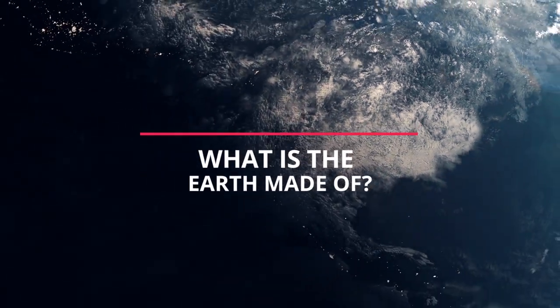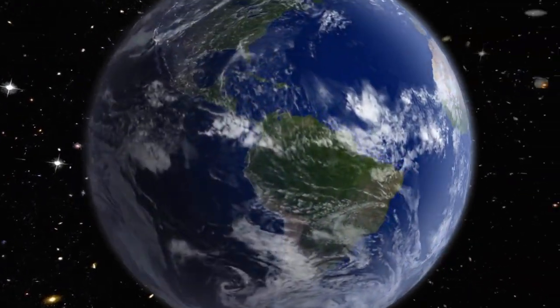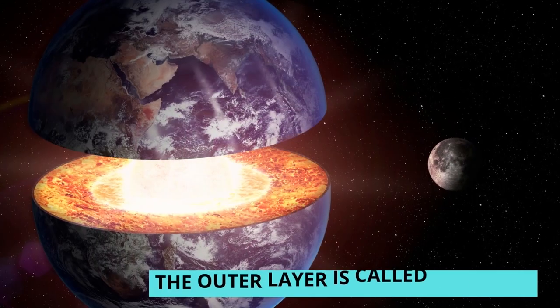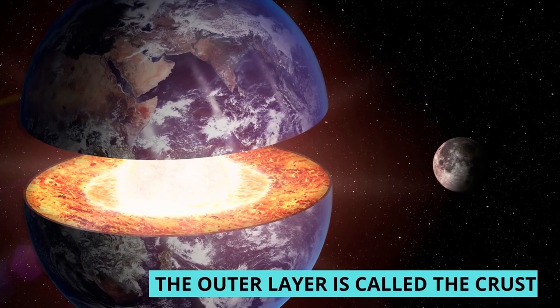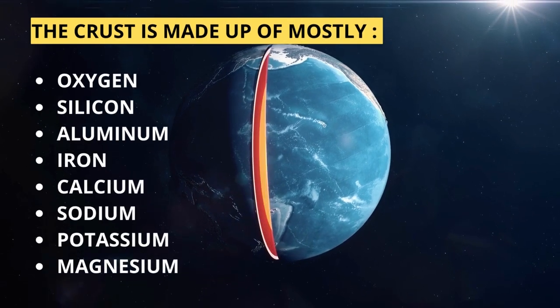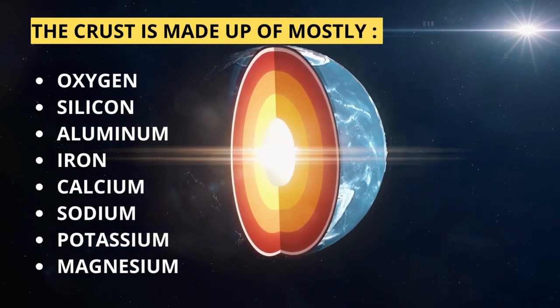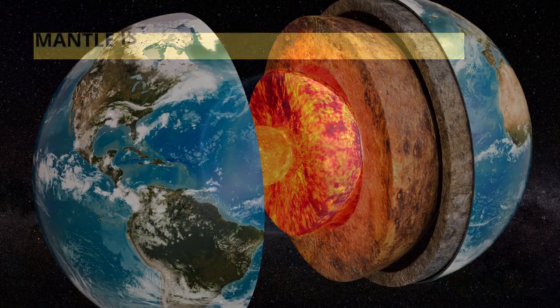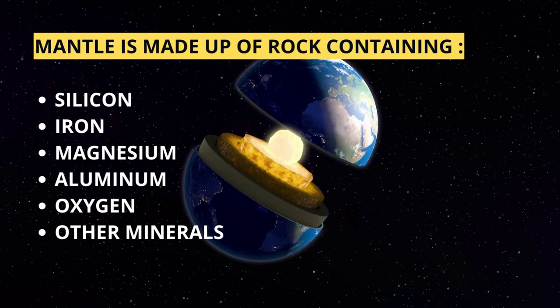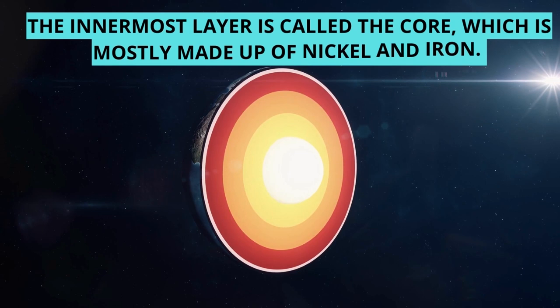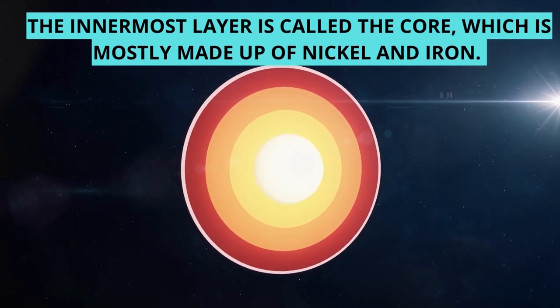What is the Earth made of? The Earth is made out of many things. It is actually layered much like the layers of an onion. The outer layer is called the crust. It is made up of mostly oxygen, silicon, aluminum, iron, calcium, sodium, potassium, and magnesium. The second layer is called mantle. It is made up of rock containing silicon, iron, magnesium, aluminum, oxygen, and other minerals.